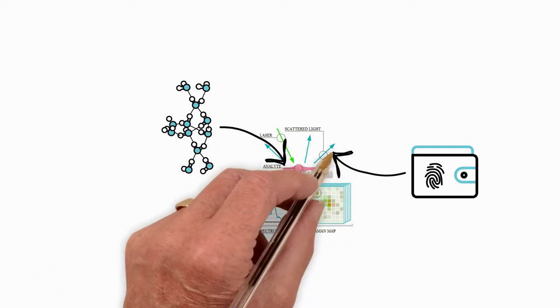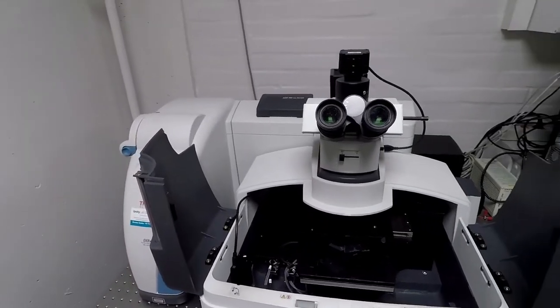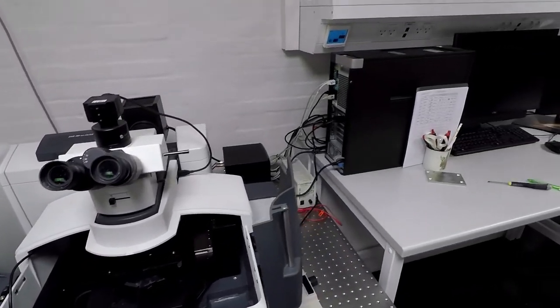Want to hear from an expert? A formal answer would be that Raman spectroscopy is a spectroscopic technique that allows you to determine vibrational modes of a molecule. In other words, it basically helps you to identify a material. So if you have a known material — it can be solid, it can be liquid or gas — you can actually identify it.